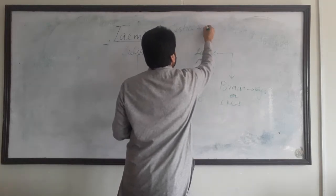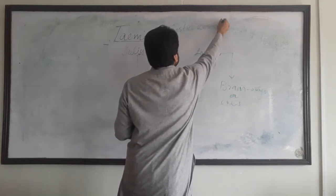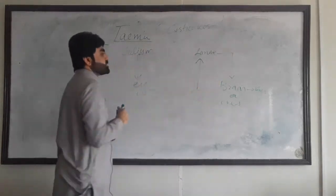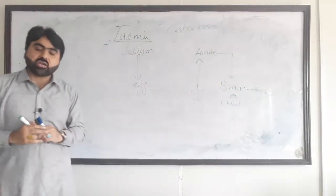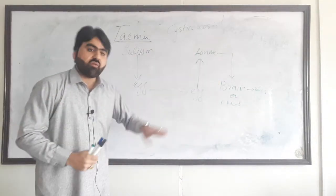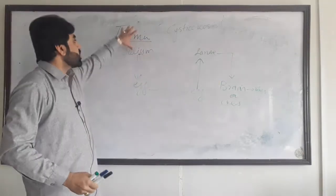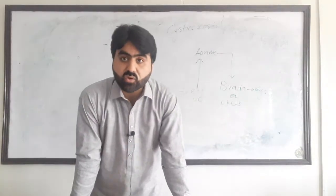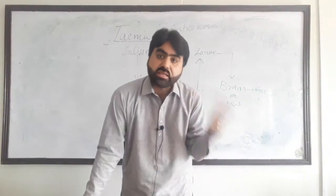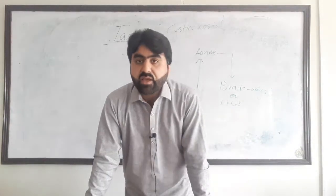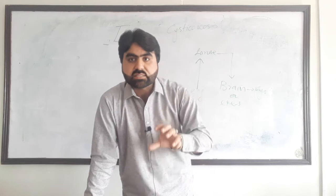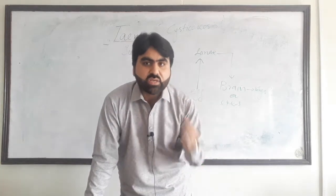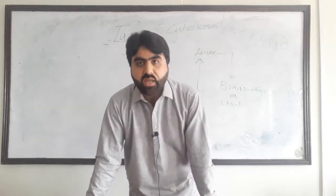Because it is caused by cysticercus larvae, this condition is known as cysticercosis. The intestinal infection caused by both Taenia saginata and Taenia solium is known as taeniasis.